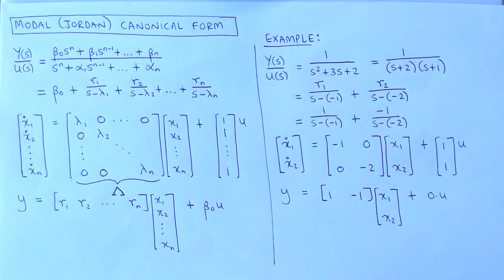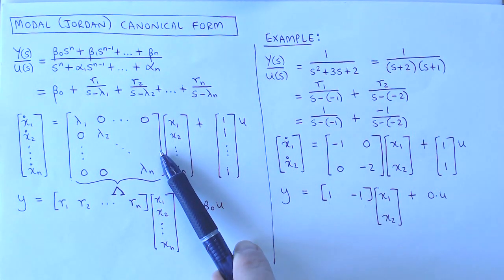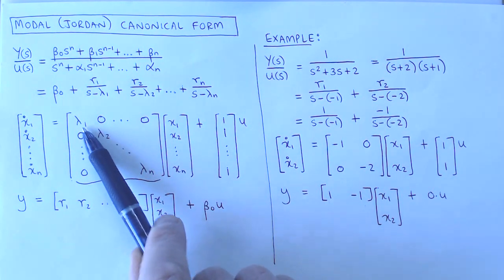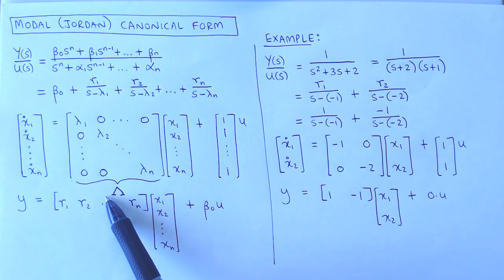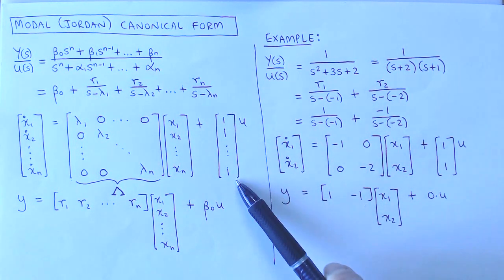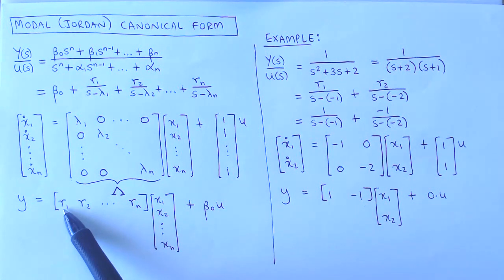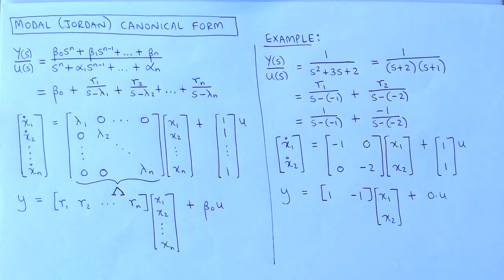We can now choose the states such that the state variable model has the following form. The matrix A is a diagonal matrix with the poles of the system lambda 1 to lambda n on the diagonal. This matrix is in a special form and is often called the matrix capital lambda instead of A. The B vector contains only 1s, the C vector contains the residuals R1 to Rn, and the scalar D is given by beta 0.